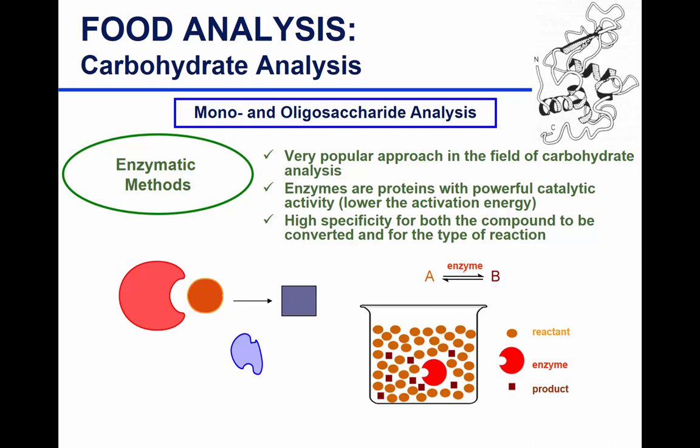Another method, other than colorimetric, is the use of enzymes — a very common approach for measuring mono- and oligosaccharides. Enzymatic methods are very common in carbohydrate analysis in general. We use enzymes to measure total starch, the components of starch (amylose and amylopectin), and also dietary fiber.